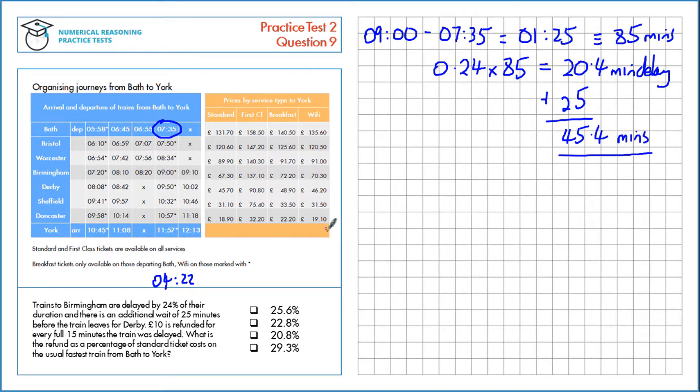So, we're told that for every full 15 minutes the train was delayed, £10 is refunded. Three lots of 15 minutes are 45 minutes, and obviously there's not going to be another full 15 minutes. So that means we're going to have a refund of £30 for those three lots of 15 minutes.